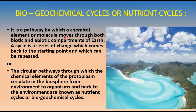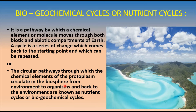Overall, a biogeochemical cycle or nutrient cycle is a pathway by which chemical elements or molecules move through both the biotic and abiotic compartments of the earth, occurring in a series of changes that comes back to the starting point and can be repeated. We can also define it as the circular pathways through which chemical elements of the protoplasm circulate in the biosphere — from the environment to the organism and back to the environment.